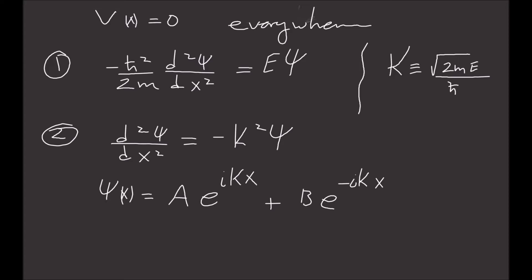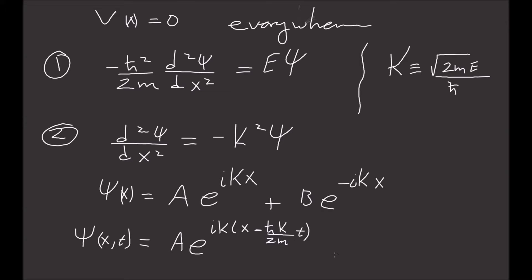If we want to find the time-dependent solution, we invoke the time solution with it. So psi of x and t is equal to A times e to the i(kx minus h-bar k squared over 2m times t), plus some constant B times e to the minus i(kx plus h-bar k squared over 2m times t). Let's call this equation number three.